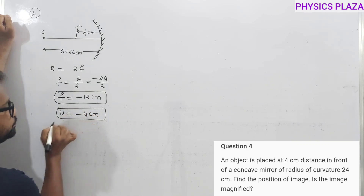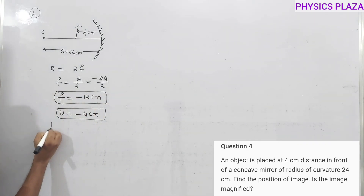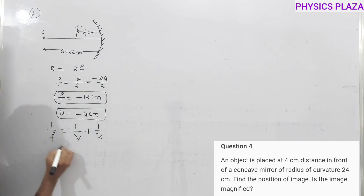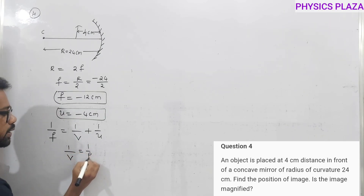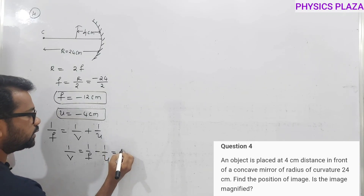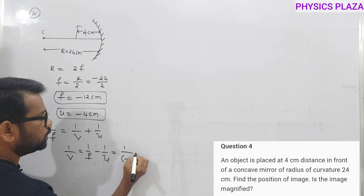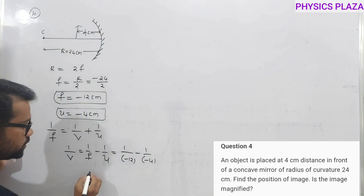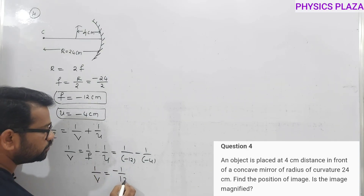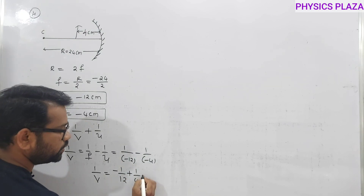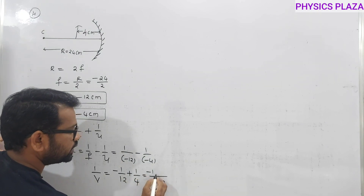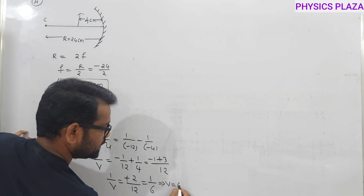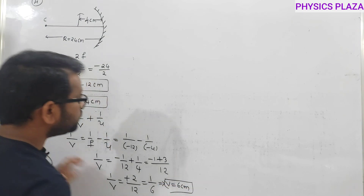Using 1/v = 1/f − 1/u: substituting 1/v = 1/(−12) − 1/(−4) = −1/12 + 1/4. Taking LCM of 12: 1/v = −1/12 + 3/12 = 2/12 = 1/6. Therefore v = +6 centimeters. We got a positive value for image distance, which means the image is formed behind the mirror — it is a virtual image.